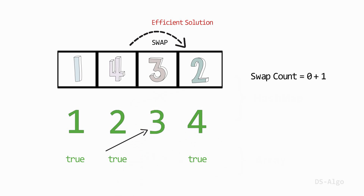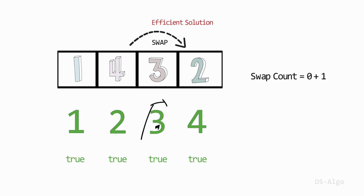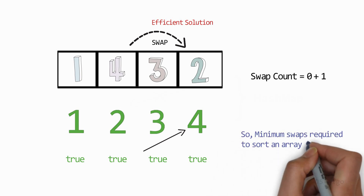Mark position 3 as visited. Comparing element position 3 with its element value, which is 3 — they are the same, so this element doesn't need to be swapped. Move to the next position, which is 4. But this element was already visited, so skip it and find the next unvisited element. As there are no more unvisited elements, we print the swap count. The minimum swaps required to sort this array is 1.